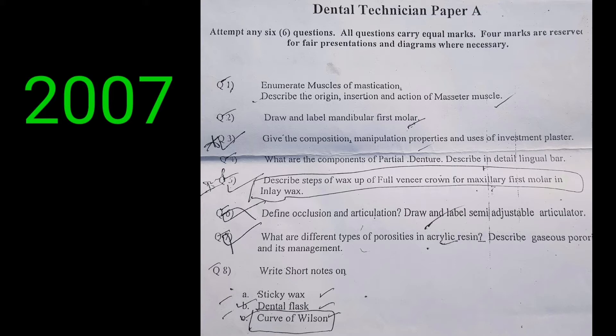Question number one: enumerate the muscles of mastication, and describe the origin, insertion, and action of the masseter muscle. Question number two: draw and label the mandibular first molar. Question number three: give the composition, manipulation, properties, and uses of investment plaster. Question number four: what are the components of partial denture? Describe in detail the lingual bar.